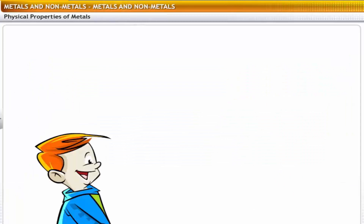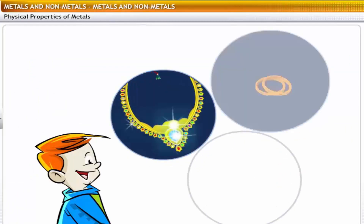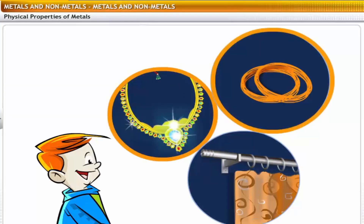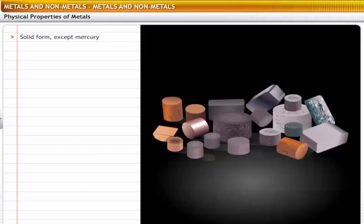If you look around, you will find metallic objects in various forms. For example, jewelry made of gold and silver, wires made of copper, and curtain rods made of aluminum are all metallic objects. Metals are used to make these objects because of some specific physical properties. Let's take a look at some important physical properties of metals.